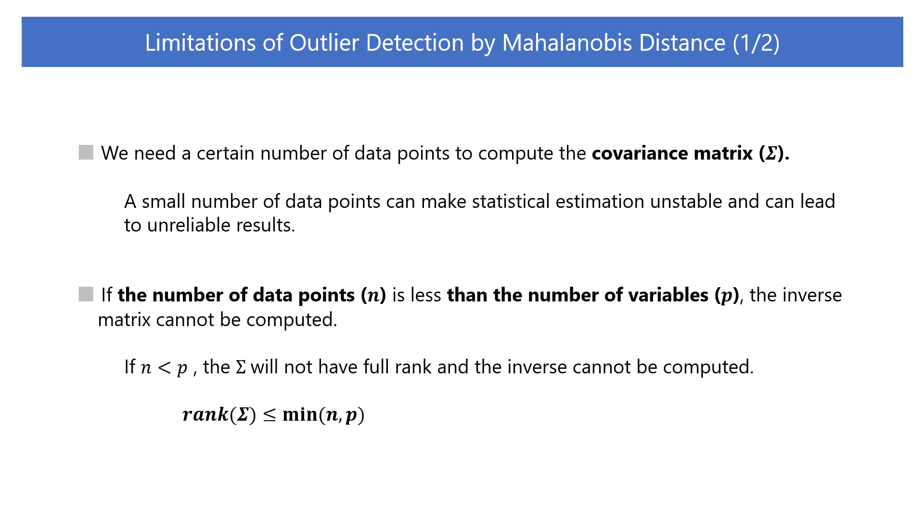To compute the covariance matrix, the covariance for each variable must be computed. The dimension of this covariance matrix is the number of variables by number of variables. For the inverse of the covariance matrix to exist, the matrix must have full rank. If the number of data points n is less than the number of variables, the covariance matrix will not have full rank and the inverse cannot be computed. In short, the rank of the covariance matrix is constrained to the smaller of the number of samples and the number of variables. If the number of data points is less than the number of variables, the rank will be less than the number of variables, making the matrix singular — that is, non-invertible.